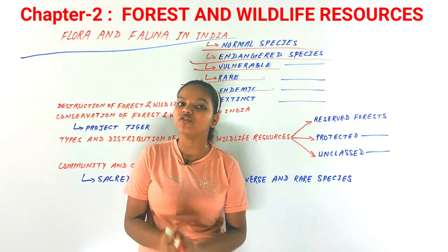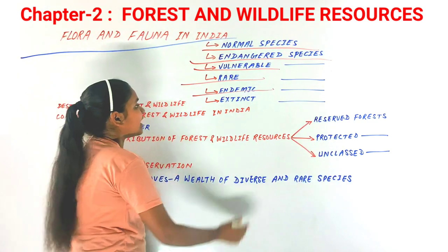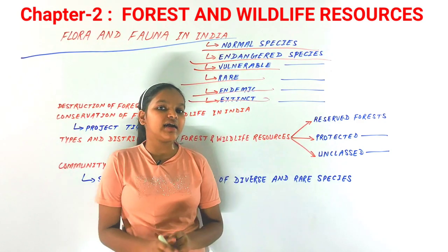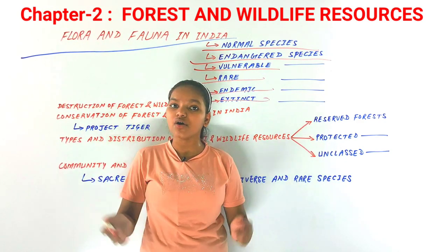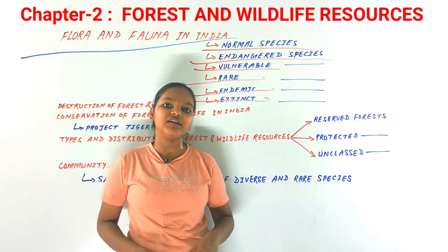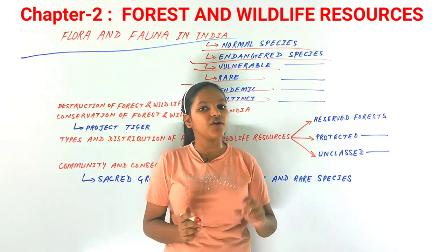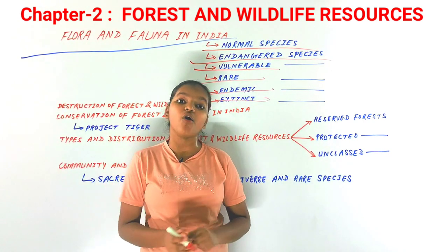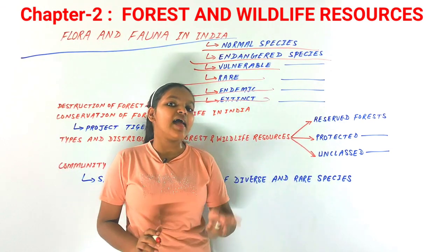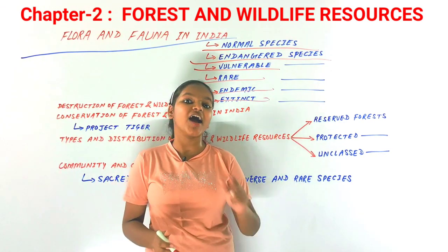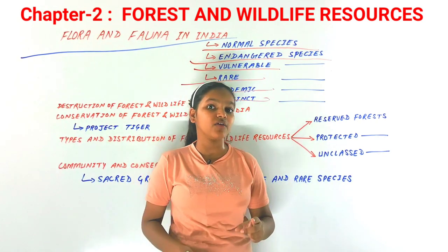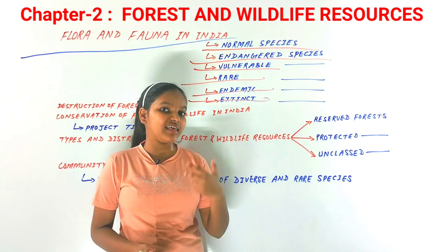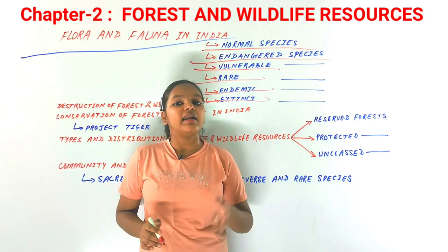Extinct Species are those no longer found where they are likely to be found or where they may occur. They can be extinct from a region, a country, a continent, or from the entire earth. Examples include the Asiatic cheetah and the pink-headed duck.